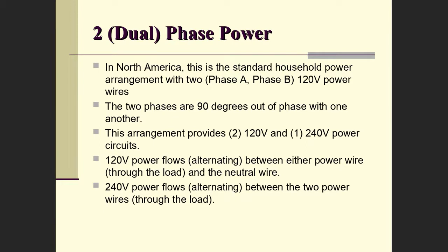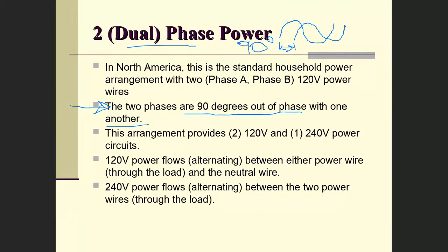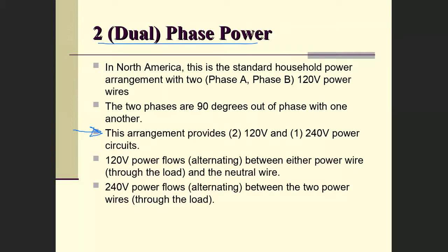The interesting thing to note is that the two phases — phase A and phase B — are 90 degrees out of phase with one another. One starts earlier and the other starts later, and the difference between them is 90 degrees. This arrangement gives us two sources of 120 volts and one source of 240 volts.